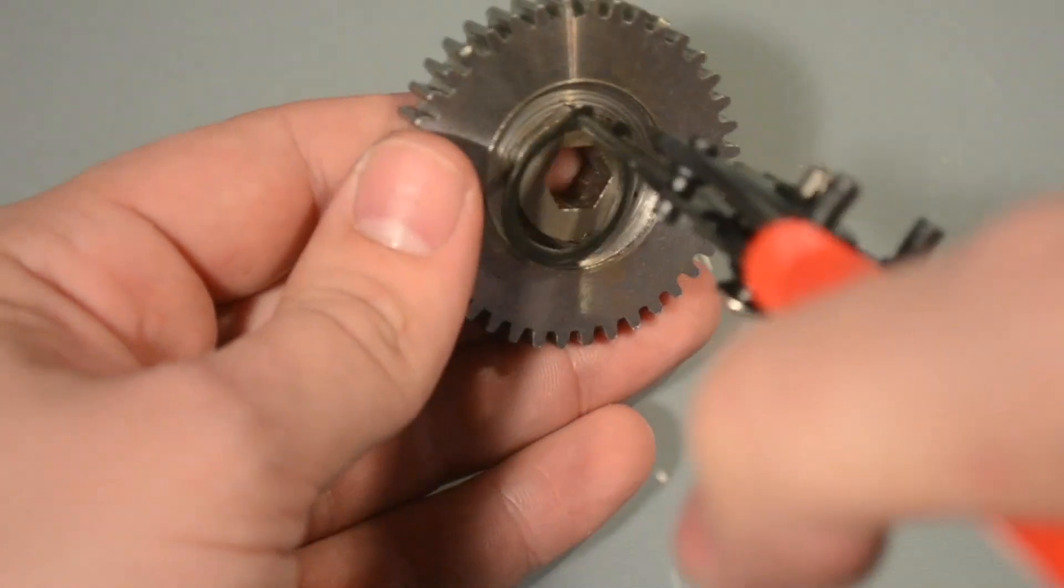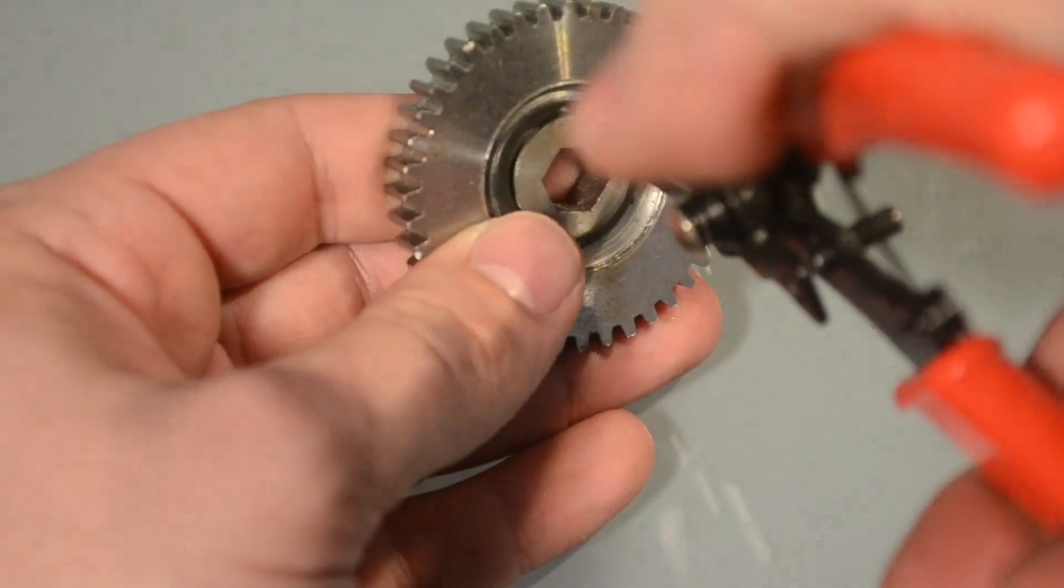Next, install a retaining clip inside the opposing counterbore and your hub will lock into place.